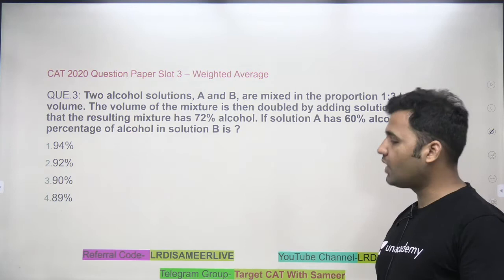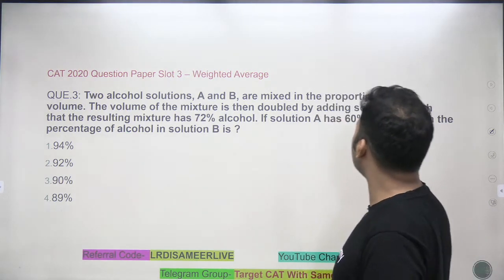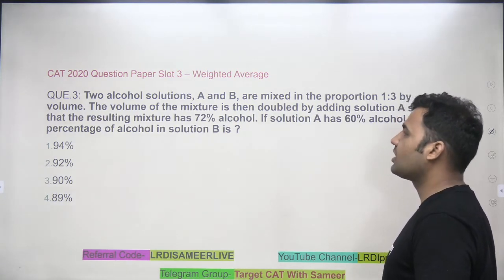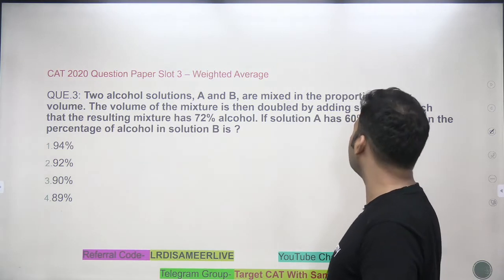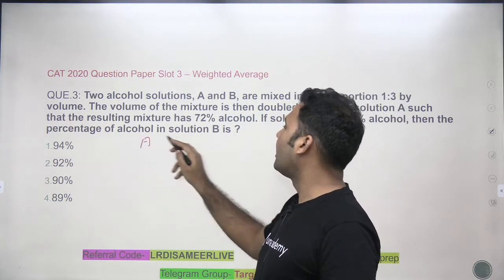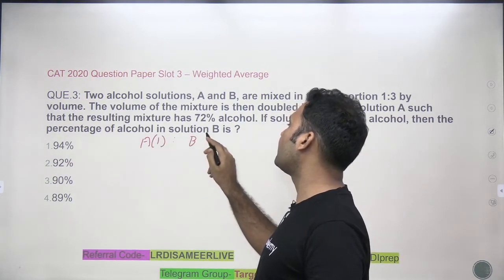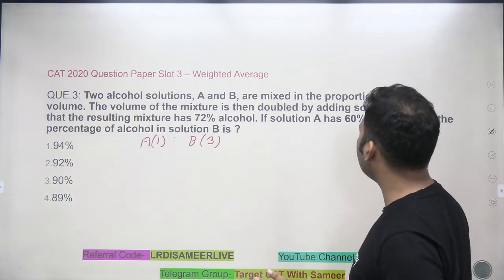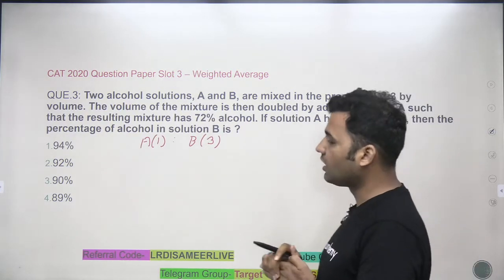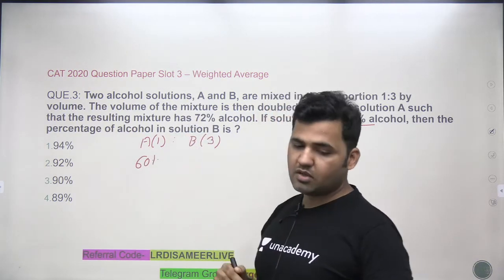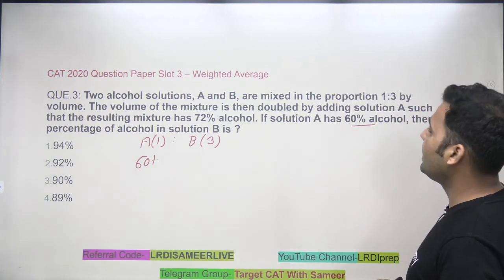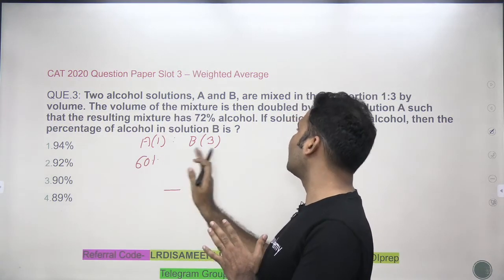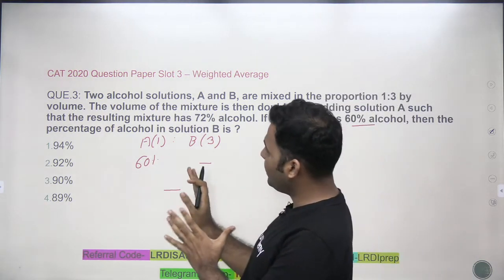Now this is question number 2 and let's have a look at question number 3 also. It's a weighted average question. Simplest one. Let's look at it. Two alcohol solutions A and B are mixed in the proportion 1 ratio 3 by volume. And the volume of the mixture is then doubled by adding solution A such that the resulting mixture has 72% alcohol. So you have a mixture of A and B solution. And A and B have been mixed in the ratio 1 ratio 3. That means 1 unit of A have been mixed with 3 units of B. And we do not know what is the percentage of alcohol in A. We do not know what is the percentage of alcohol in B. Later it's given that solution A has 60% alcohol. So a solution which is 60% alcoholic, you are taking 1 unit of A.